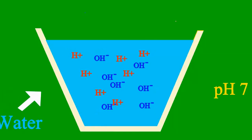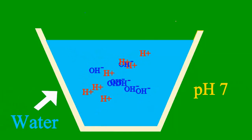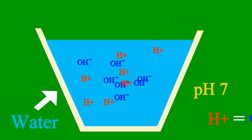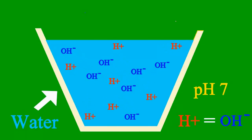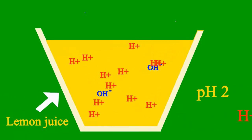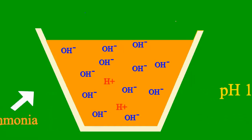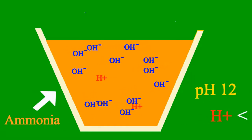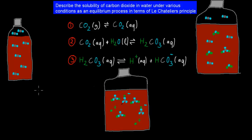When the pH is 7, the sample is neither an acid nor a base. Less than 7, it's an acid; more than 7, it's a base.